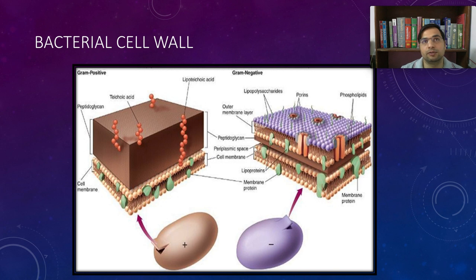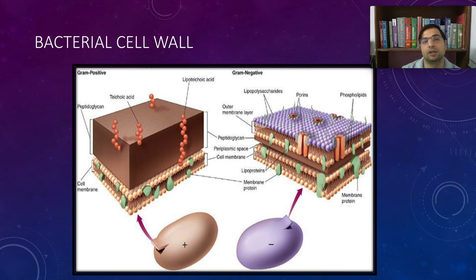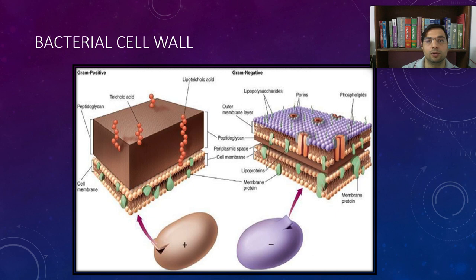We have already studied gram positive bacteria: the first was pneumococcal — Streptococcus pneumoniae — then staphylococcal bacteria, then clostridial bacteria, then diphtheria bacteria, and enterococcal bacteria. These are the most common gram positive bacteria. We will also study them in different systems, such as respiratory system pathologies.